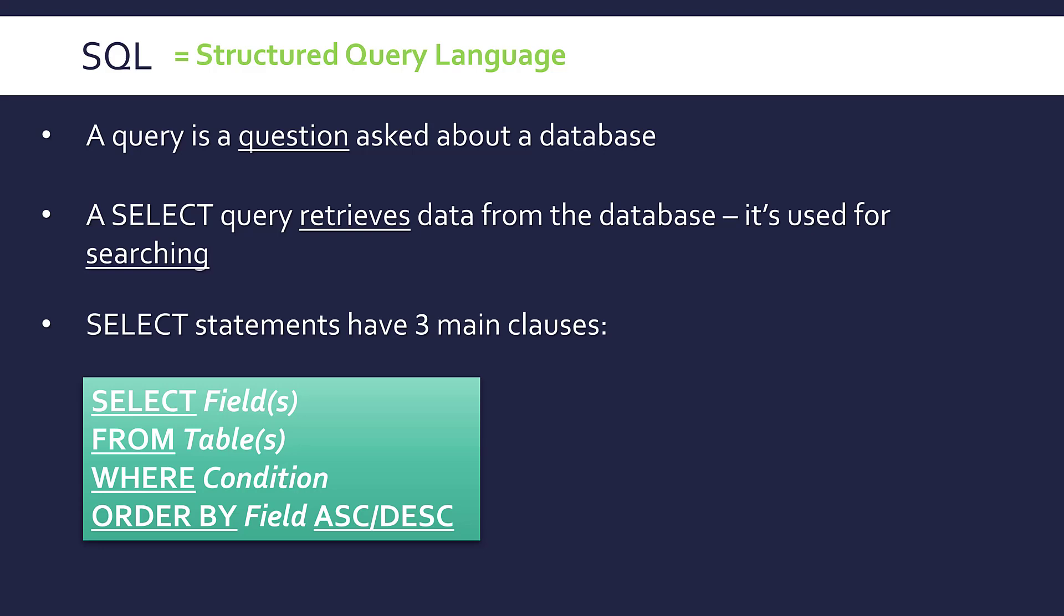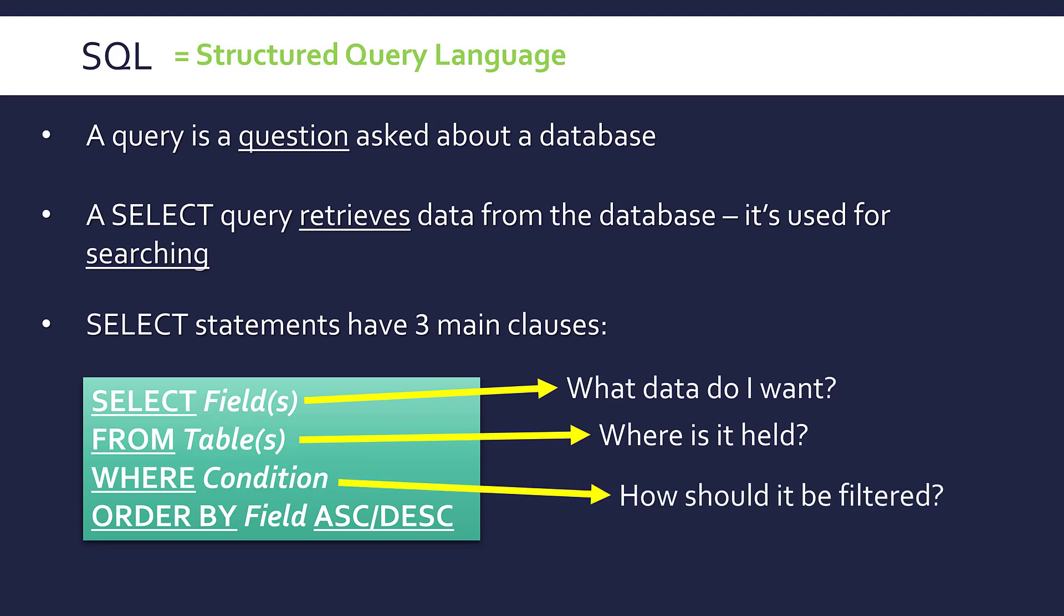Before you start panicking about learning a brand new language, this is not as much syntax to learn, but you have got a novel structure. Select fields: the first part of an SQL select query is effectively asking what data do I want? The fields are the columns. So what parts of the database, what parts of the table do I actually need? From table is where you write down where the data is held, so you write down the table name or table names if you've got multiple.